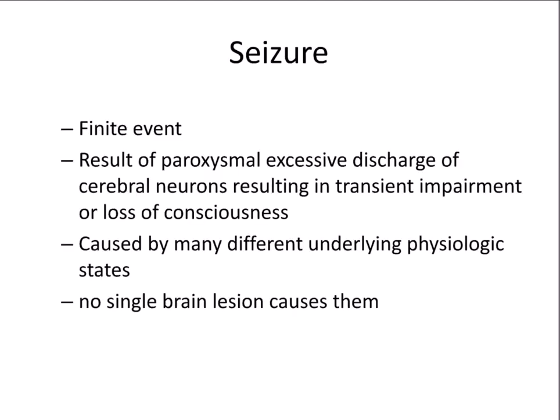So exactly what is a seizure? A seizure can be defined as a finite event — it begins and ends at a specific time — and it's a result of excess discharge of cerebral neurons resulting in an impairment of some sort. The kind of seizure will dictate what kind of impairment will be evident, or a loss of consciousness. It can be caused by many different things, and no single brain lesion causes them, meaning any patient with a lesion in the brain could present with a seizure. Some seizures are also inherited.